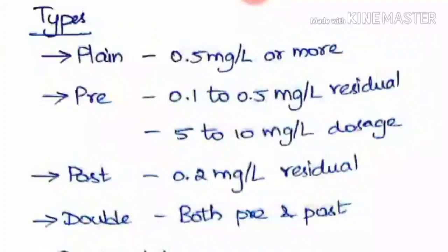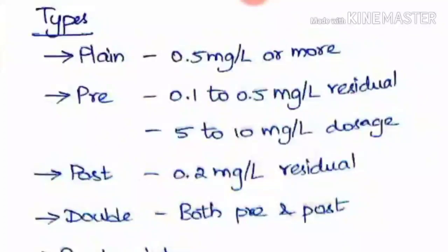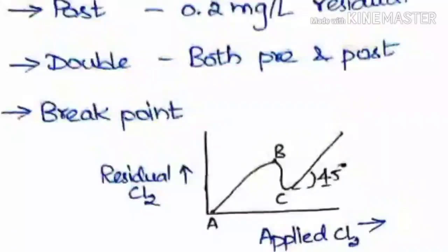In pre-chlorination, the residual chlorine must be 0.1 to 0.5 mg/L. Post chlorination is simply the residual that has to be maintained in the water at 0.2 mg/L. Double chlorination means applying both pre-chlorination and post-chlorination when the turbidity of water is high and the water is highly contaminated.